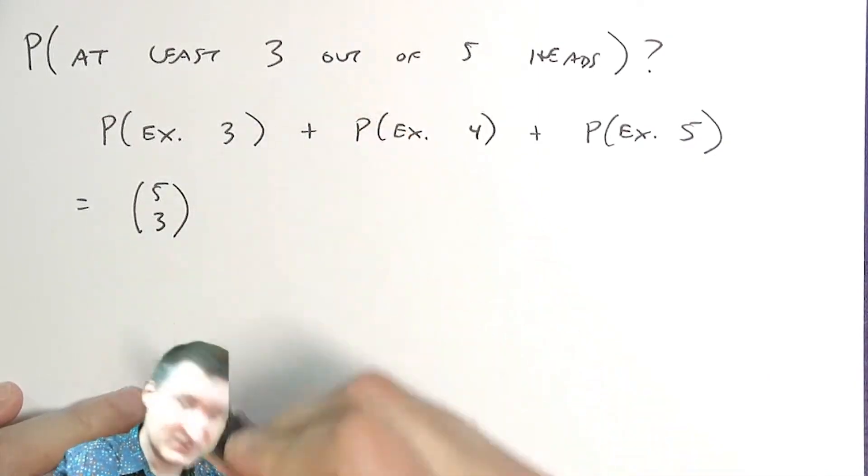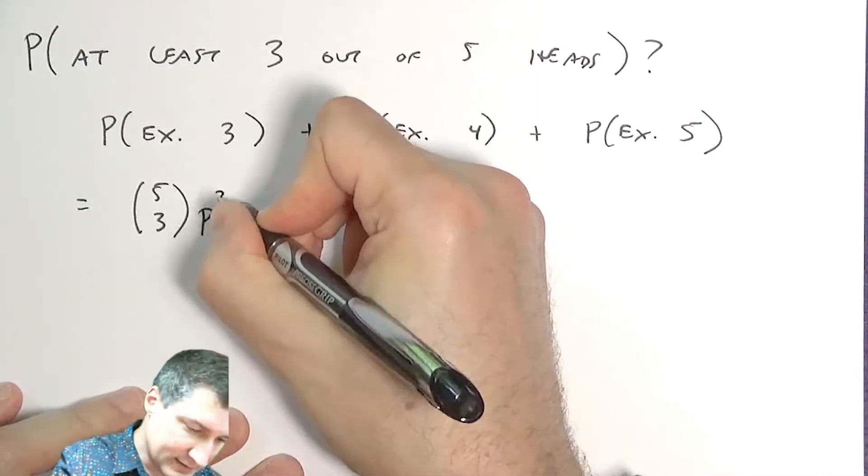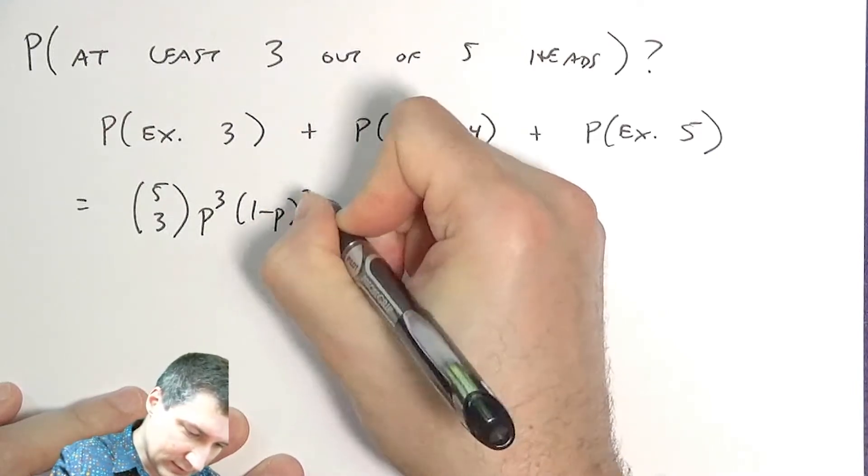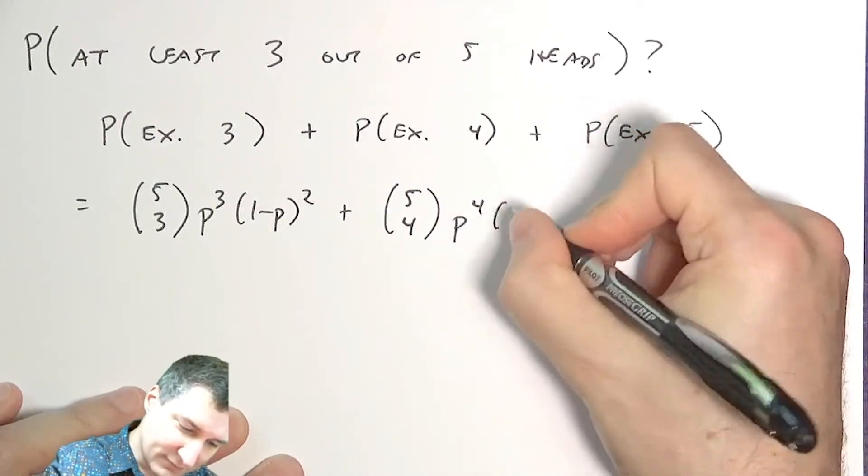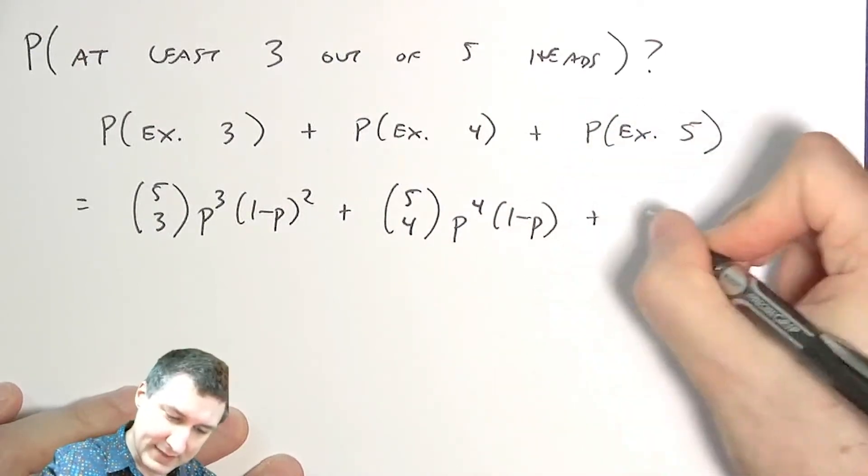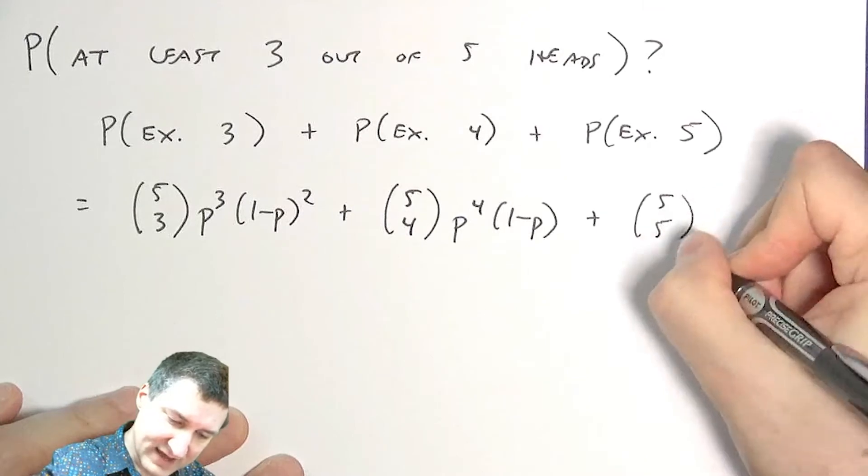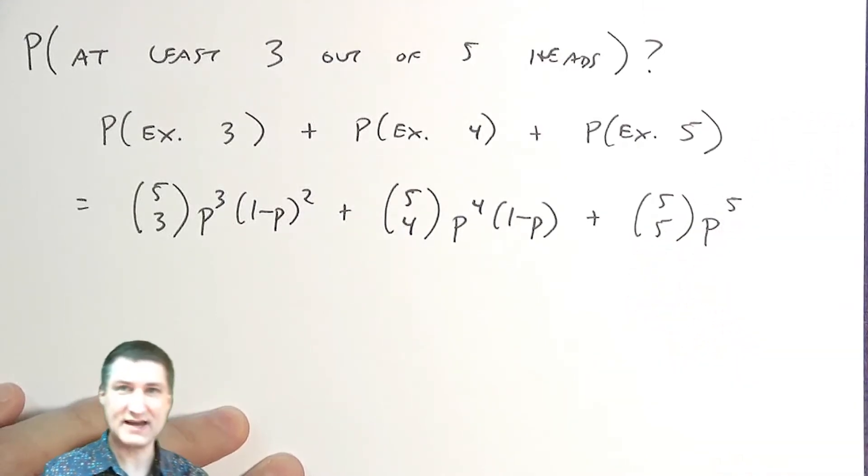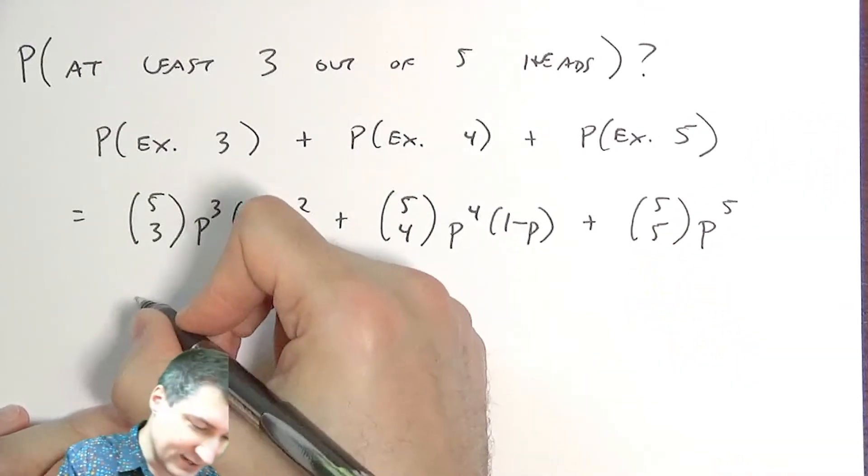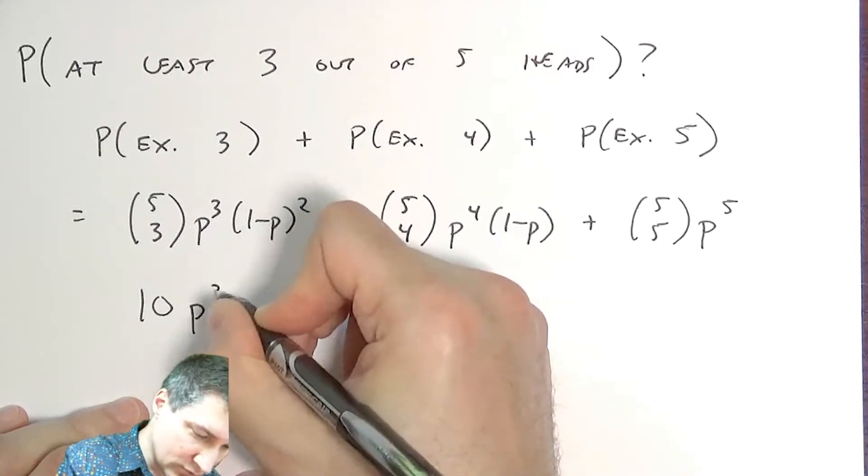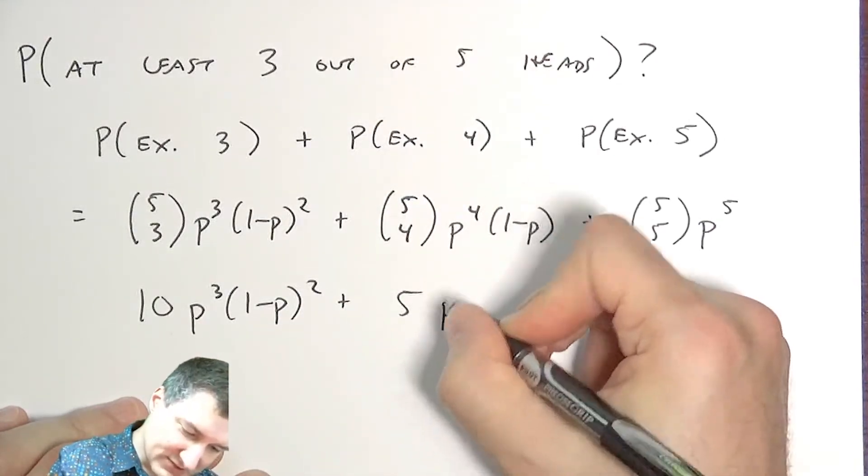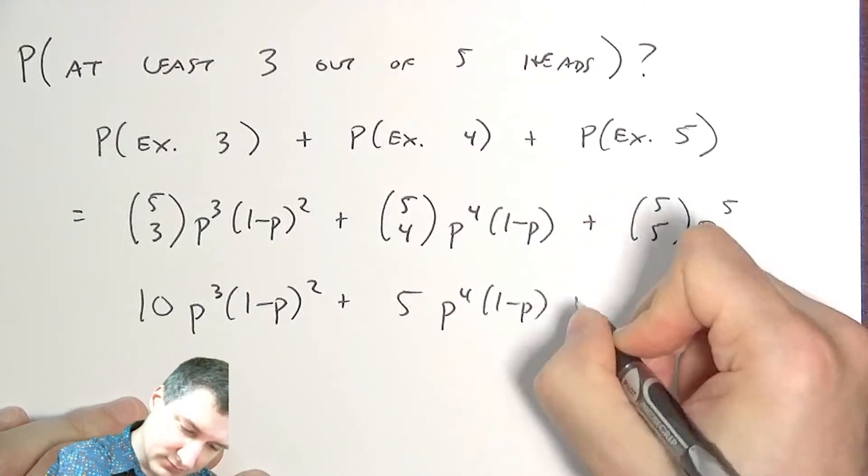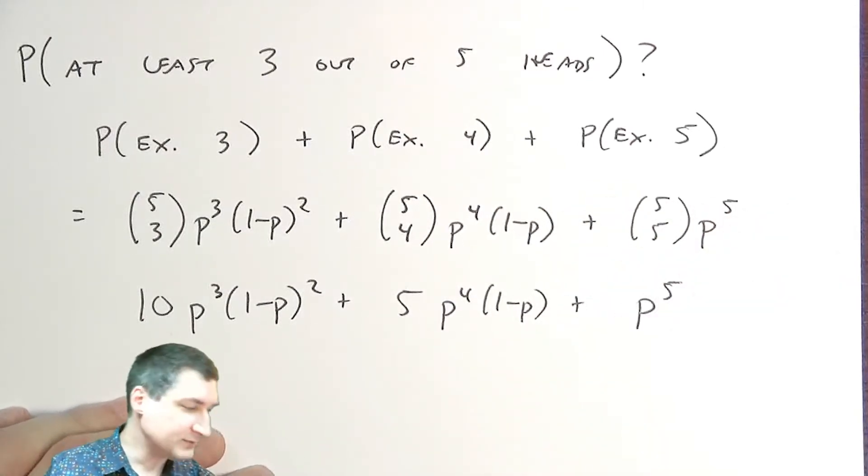I have five choose three ways of getting exactly three, five choose four ways of getting exactly four, and five choose five ways of getting exactly five. There's only one way that can happen. I can reduce this, without knowing a value of p, just by reducing the combinatorics to this number.